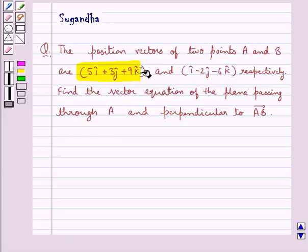5i cap plus 3j cap plus 9k cap and i cap minus 2j cap minus 6k cap respectively. Find the vector equation of the plane passing through A and perpendicular to vector AB.